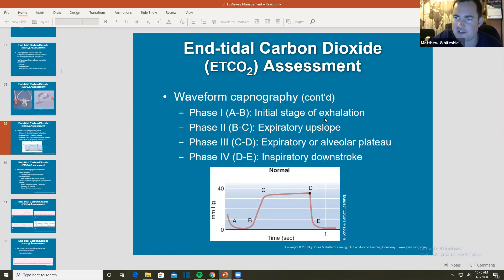A to B, initial stage of exhalation. So right before we exhale and then start exhaling. B to C, expiratory upslope. Expiratory or alveolar plateau. This plateau is extremely important. And what I mean by plateau, this flat top on these waveforms, that's what we're looking for. And then the inspiratory downstroke. I want to see this plateau that goes up, across, and then down. And I'm going to start showing you some waveforms that look a little different.